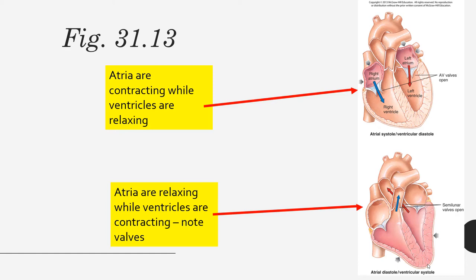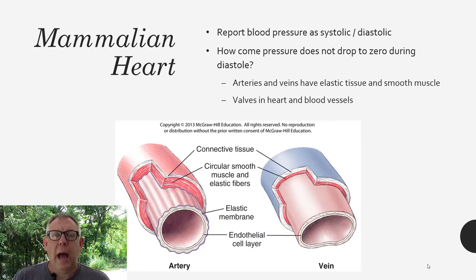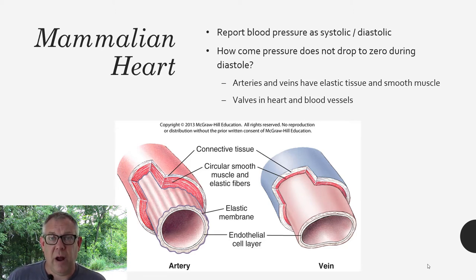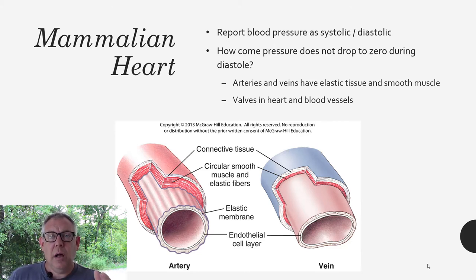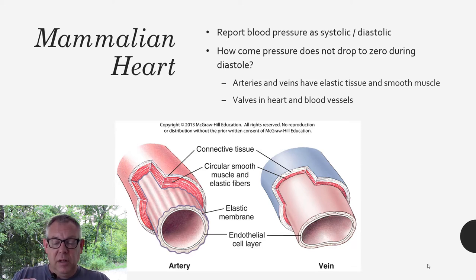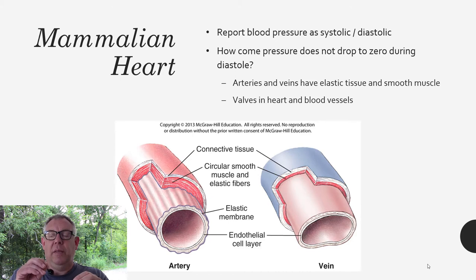When we talk about blood pressure, there are always two numbers — systolic and diastolic. Systolic is always the first, higher number; diastolic is the lower number. You're measuring the pressure when the ventricles contract and the pressure when the ventricles are relaxed. But why doesn't diastolic pressure drop to zero? If the muscles aren't contracting, how is there still pressure in the vessels? It's because arteries and veins have elastic tissue.